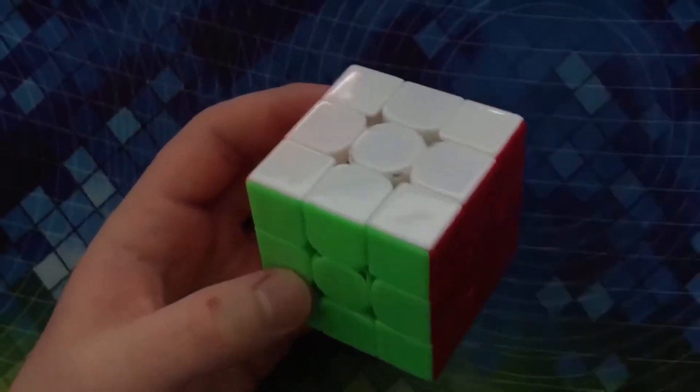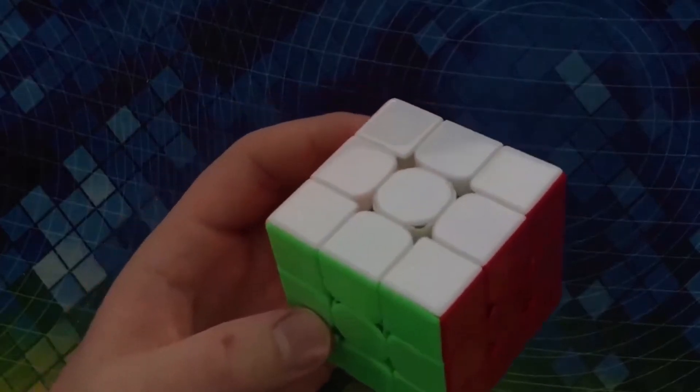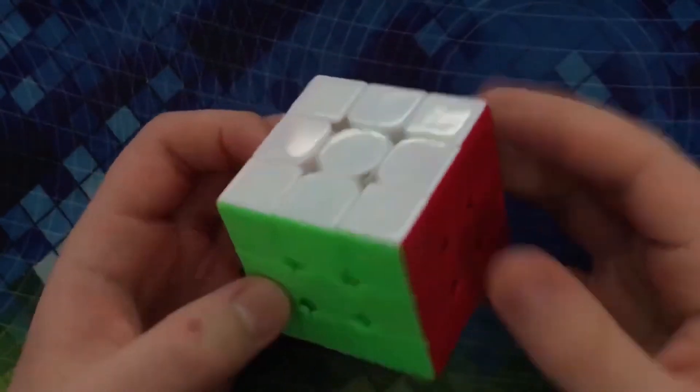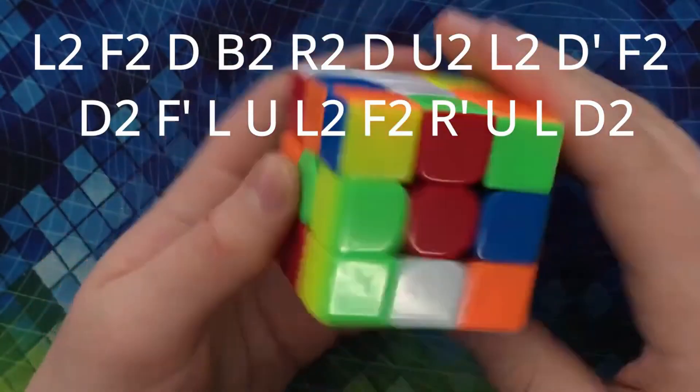Hey guys, so you just saw that solve, that 4.21 - that was the fastest TPS solve I've ever calculated. I'm going to reconstruct it real quick here. I'll put the scramble on screen, and let's get into it.